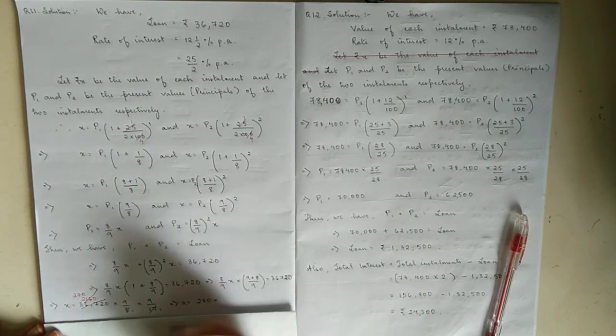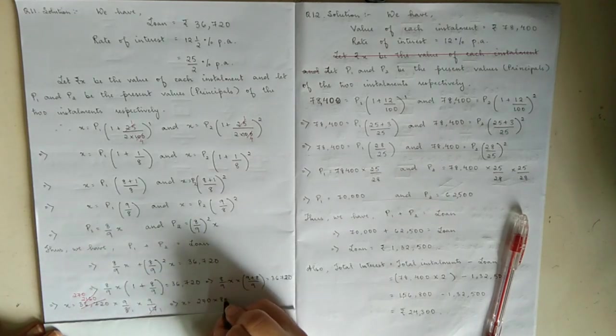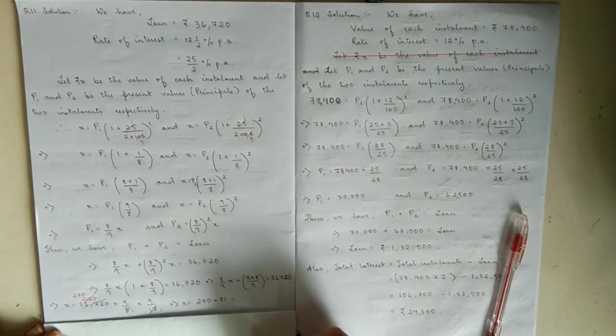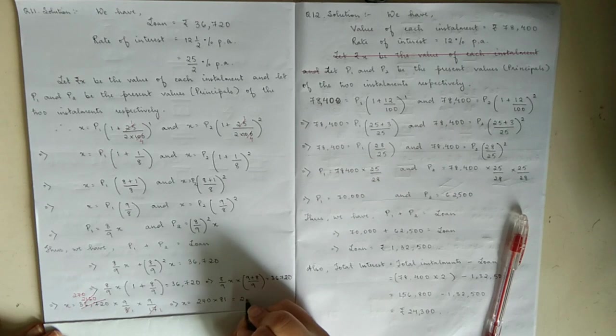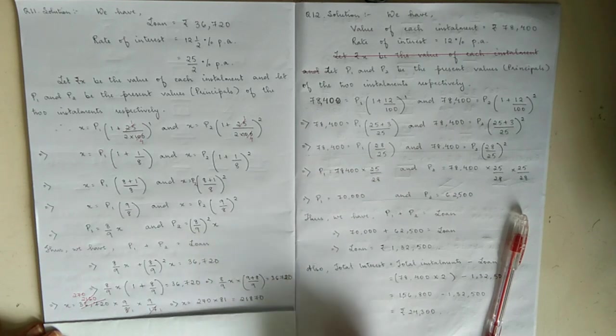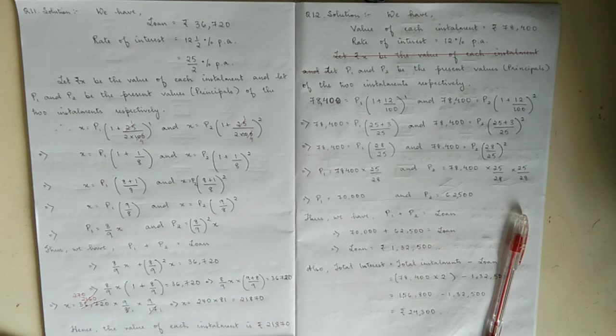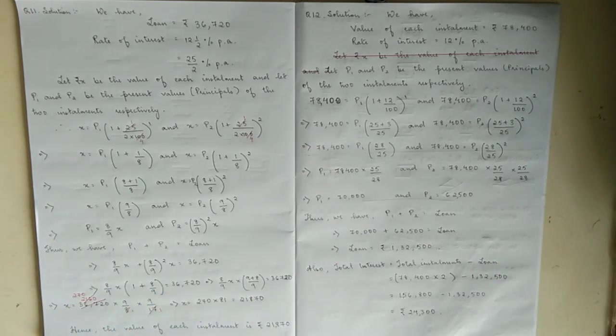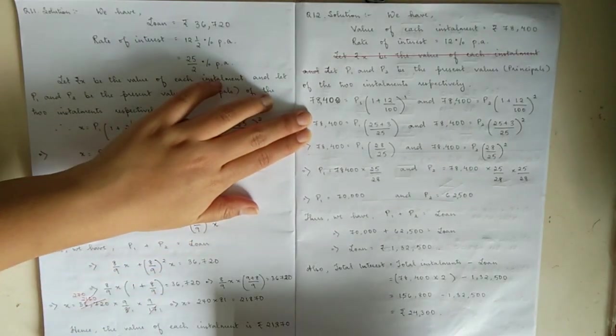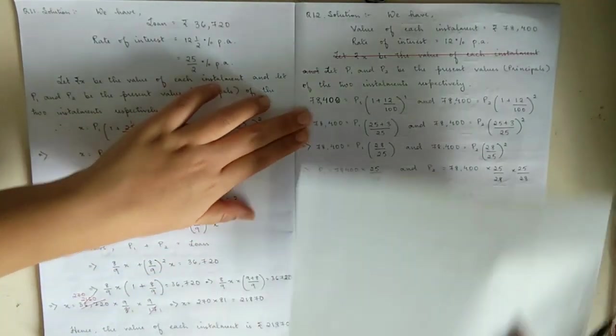You are left with 2,160 times 9 by 8. This becomes 270 times 9. 9 times 9 is 81, so this gives you 21,870. So x equals 21,870. Hence the value of each installment is rupees 21,870. Similarly, in this way you can do question number one and thirteen.